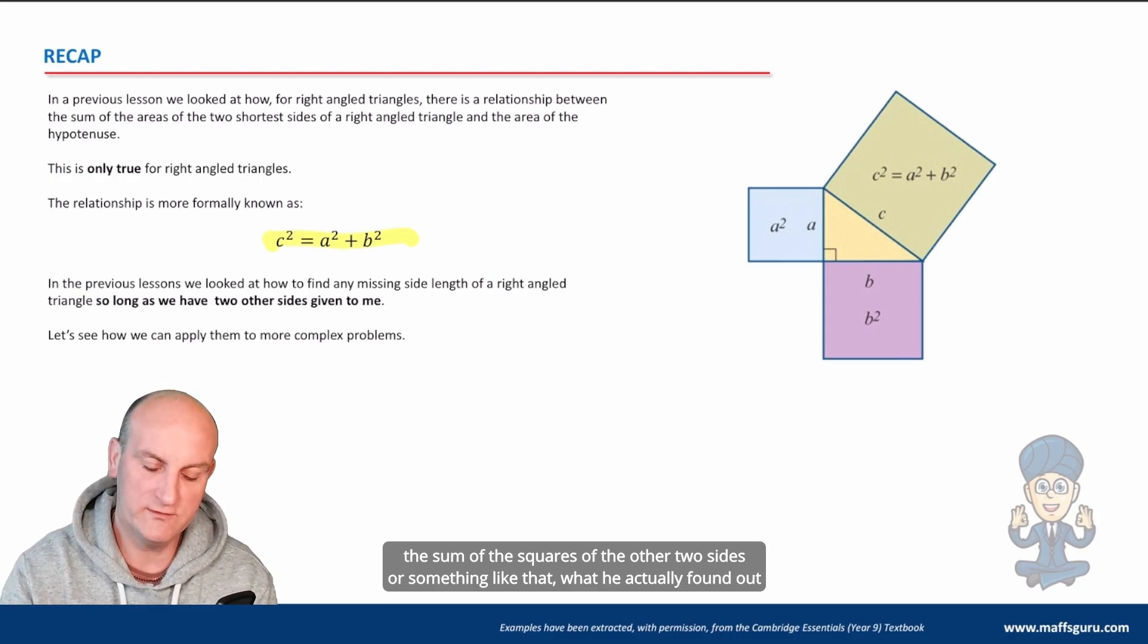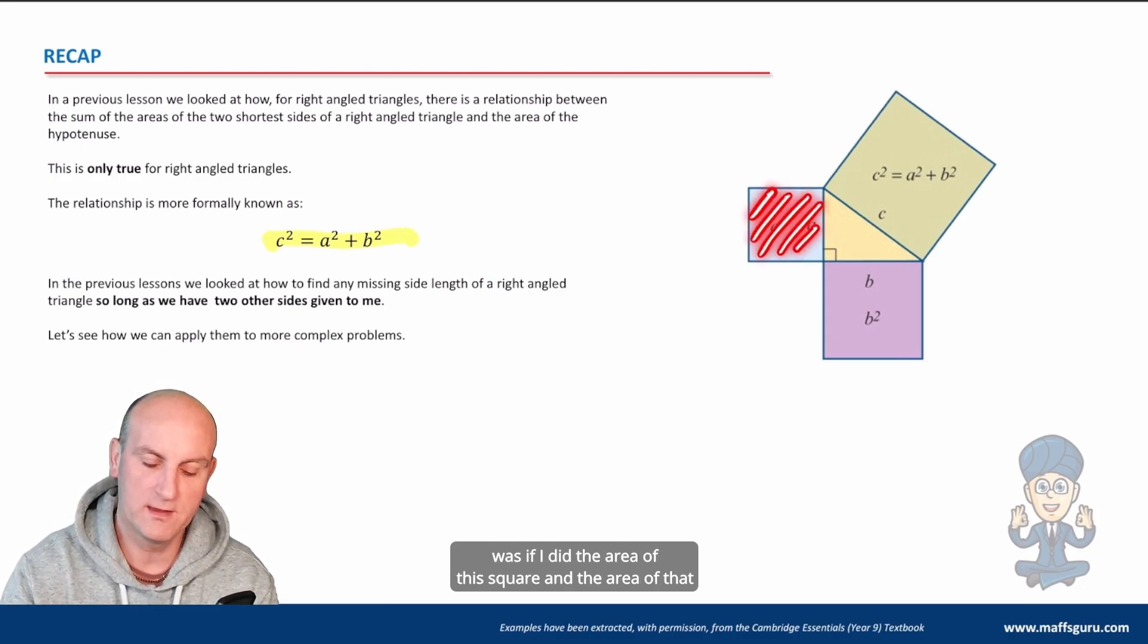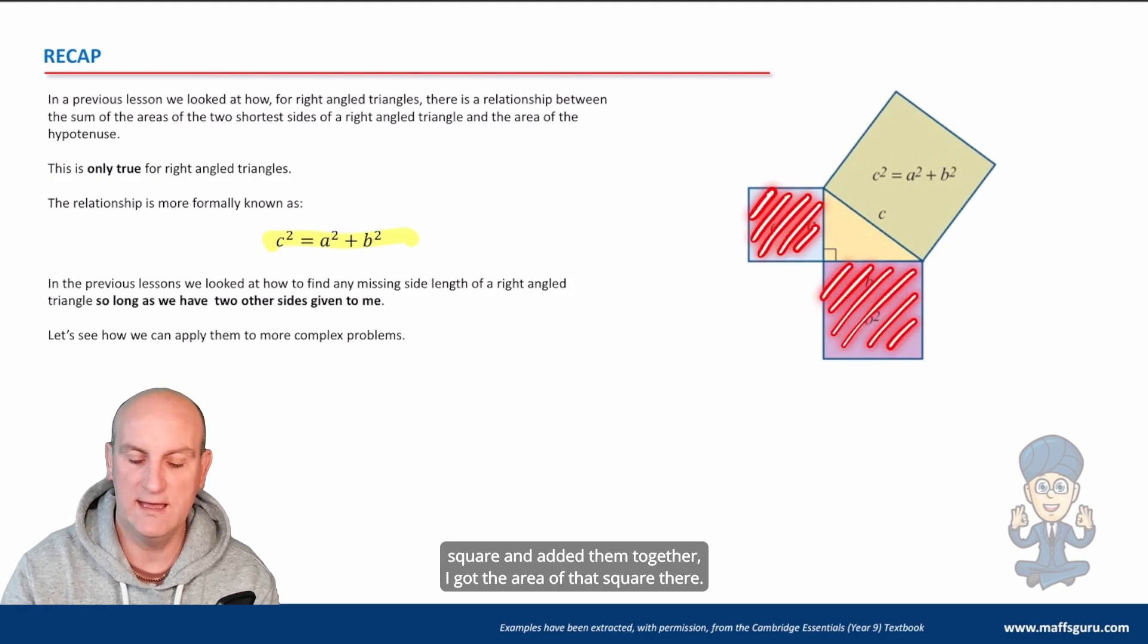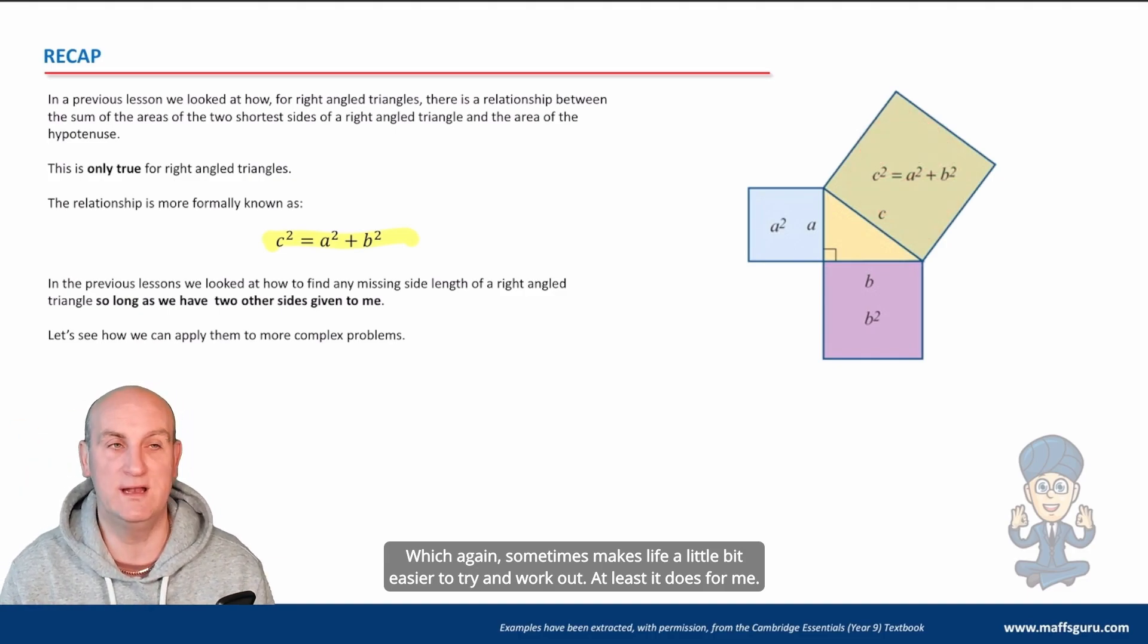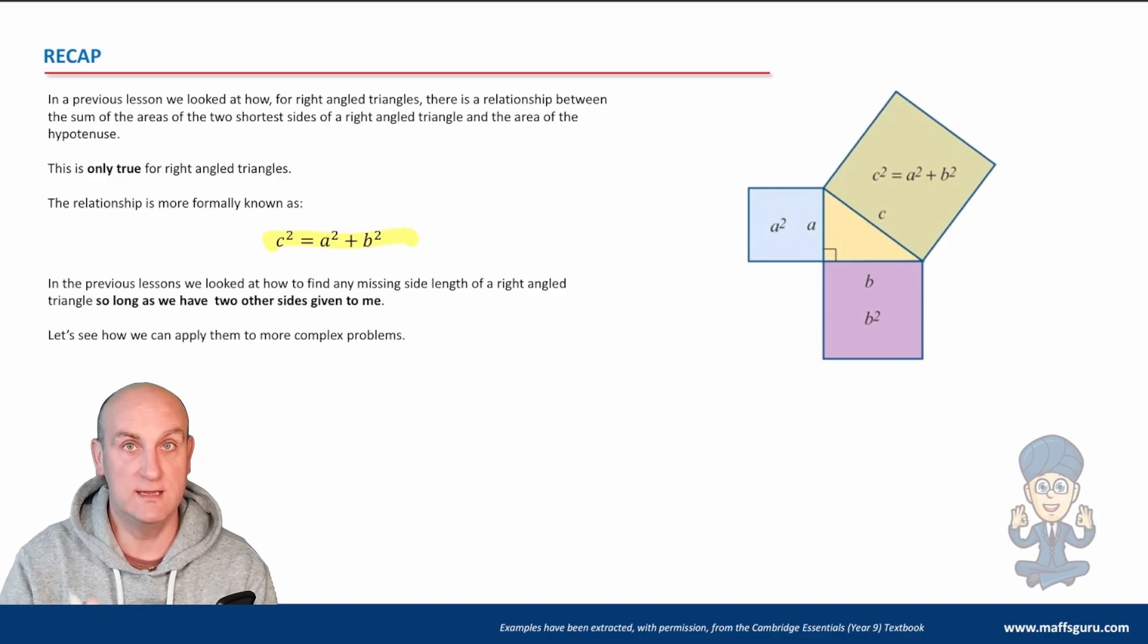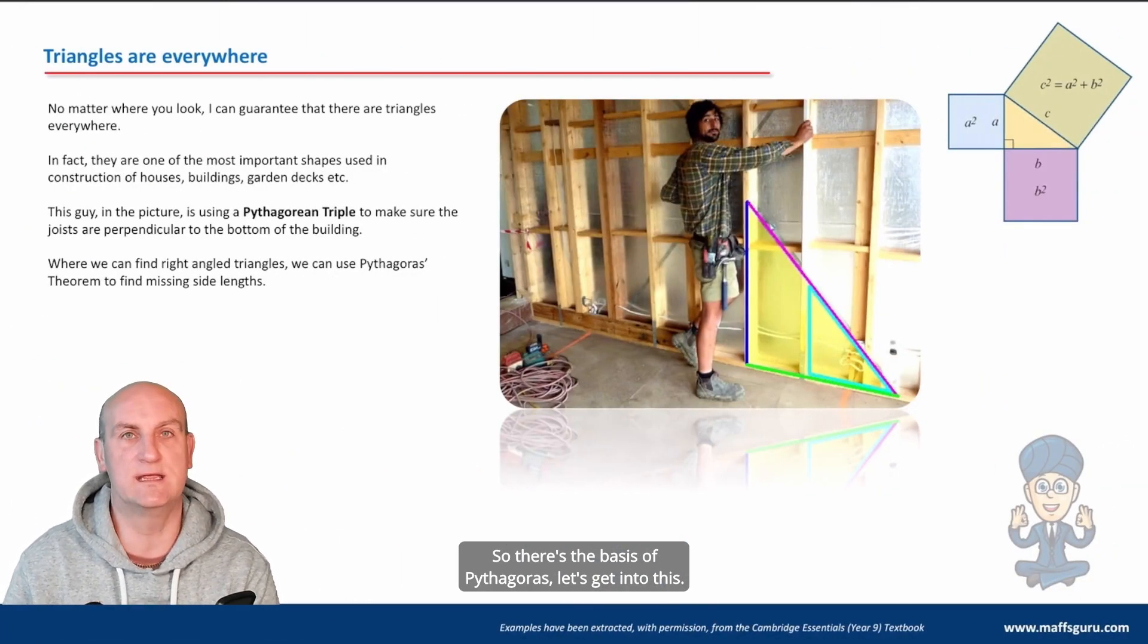What Pythag said, other than the side length of the hypotenuse squared is equal to the sum of the squares of the other two sides, was if I did the area of this square and the area of that square and added them together, I got the area of that square there. Which sometimes makes life a little bit easier to try and work out. So there's the basis of Pythagoras. Let's get into this.